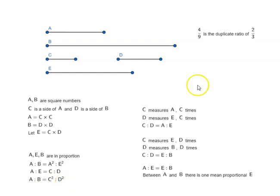Now, basically duplicate ratio means you have 2 by 3. Duplicate ratio of 2 by 3 is nothing but squaring both the numbers, so 4 by 9.